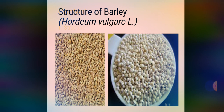Starting with the structure of barley — the scientific name of barley is Hordeum vulgare. As you can see in the picture, there are two images: the first shows a barley grain with husk, and the second shows de-hulled barley, which is of white color and also called pearl barley. Barley is similar to wheat but the husk of barley grain is quite tightly attached to the kernel or seed.